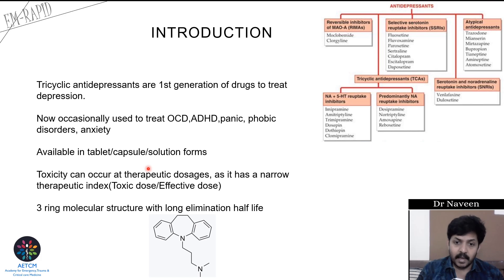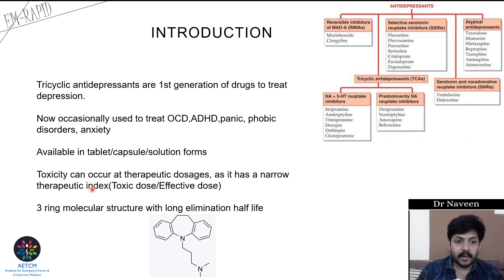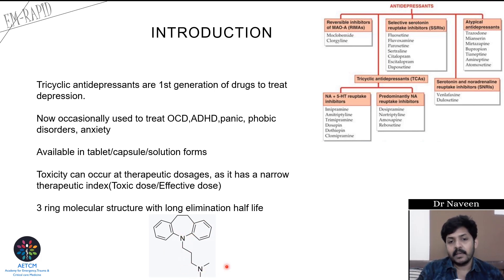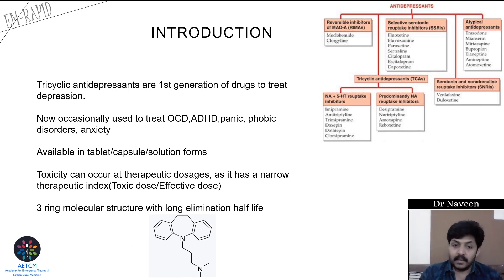TCAs are usually available in tablet, capsule, and solution forms. One major thing to remember is that TCAs have a very narrow therapeutic index, meaning TCA toxicity can occur even at therapeutic dosages. The therapeutic index is toxic dose divided by effective dose. TCAs have a three-ring molecular structure with a side chain and a very long elimination half-life.